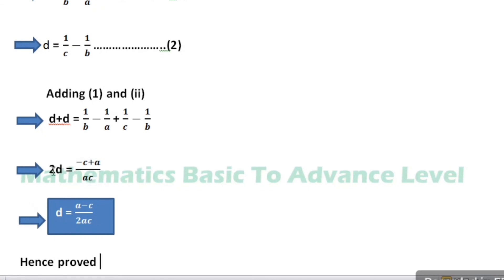Dividing by 2 on both sides, we get d is equal to a minus c divided by 2ac, which is the required solution.